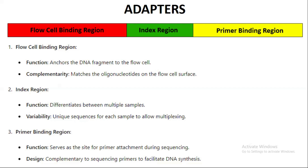The index region of the adapter is used to differentiate between multiple samples. For example, we may have a sample from a cancer patient and a sample from a normal healthy person. We extract RNA, prepare the library, and want to sequence both. The same flow cell can be used for both samples — we just differentiate between them based on the index region. Different samples have different index regions, which tells us which sequence belongs to which sample.